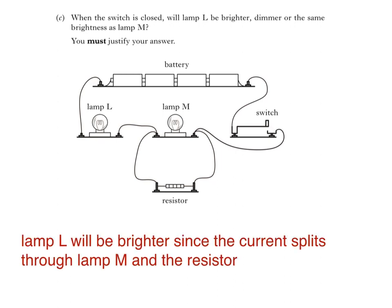Lamp L will be brighter since the current splits through lamp M and the resistor, or words to that effect. Now, that's the end of this video, but remember, you've got homework to do.